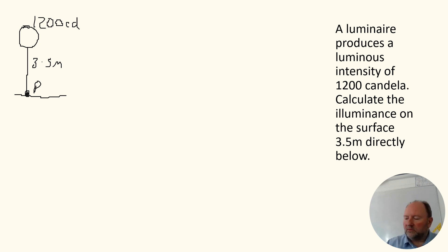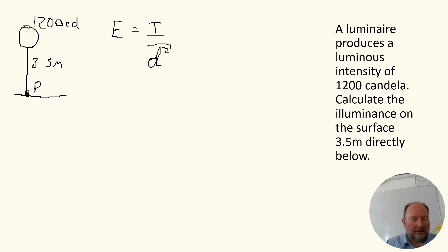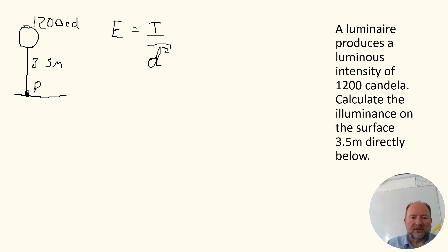The equation we're going to use is called inverse square law, and the equation is: E equals I over D squared. So E, the illuminance in lux, equals I, the luminous intensity, divided by the square of the distance.